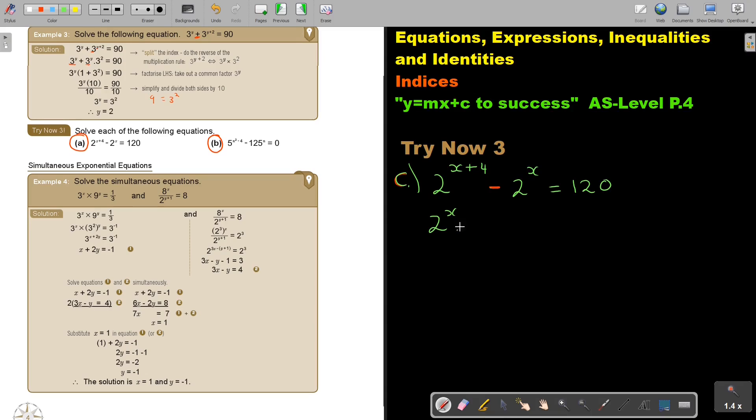So it's 2x times 2 to the 4 minus 2x equals 1 to 0. So it's 2x and then it's 2 to the power of 4, if I divide and if I divide I get minus 1 and it's 1 to 0. So 2 to the power x and this is going to be 16 minus 1 which is going to be 15 and it's 1 to 0. And I divide by 15.